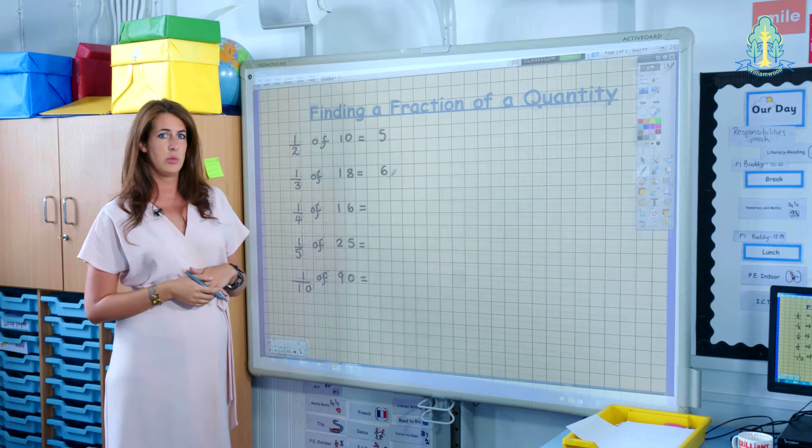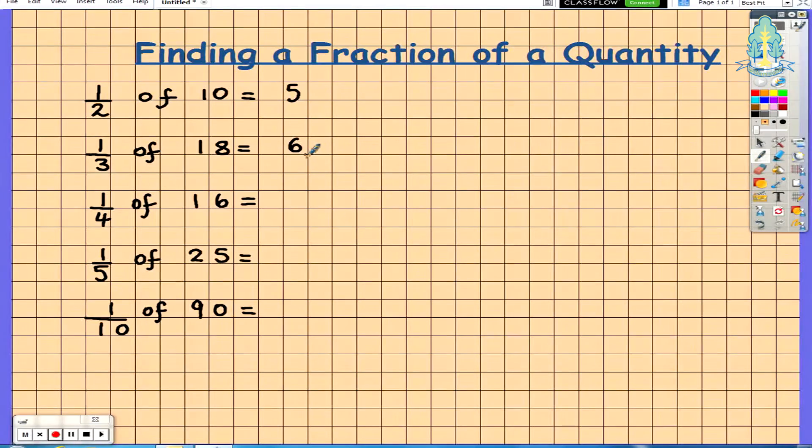Then progressing on to finding 1 quarter of a quantity. So in this example, a quarter of 16. The children take the quantity 16 and divide by 4 which will equal 4.